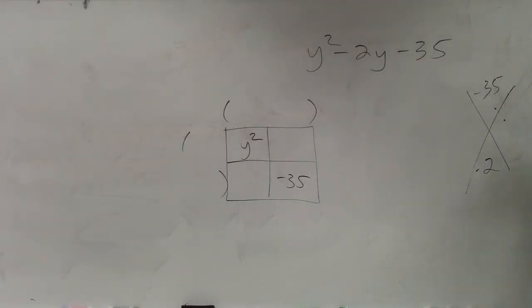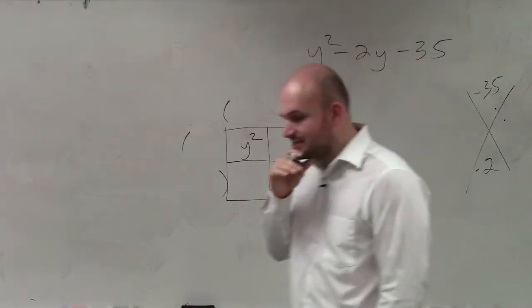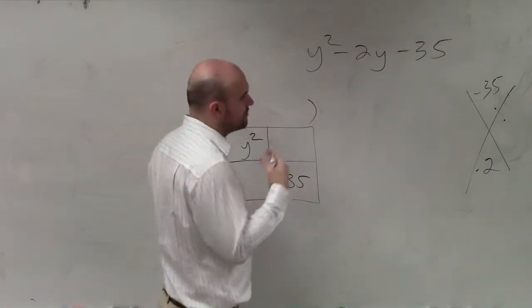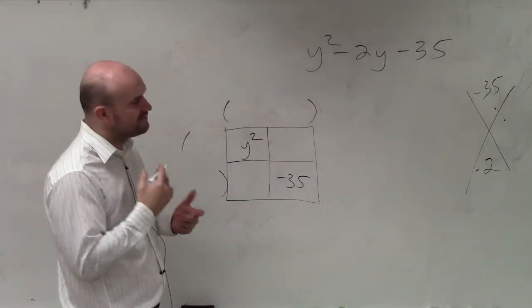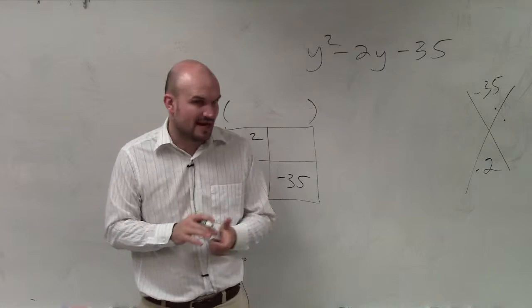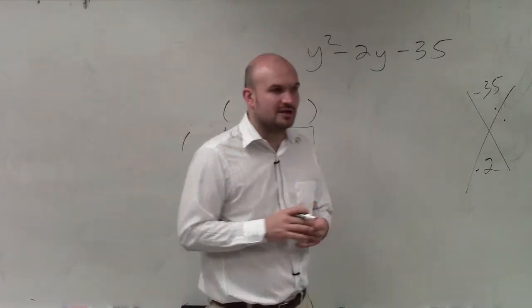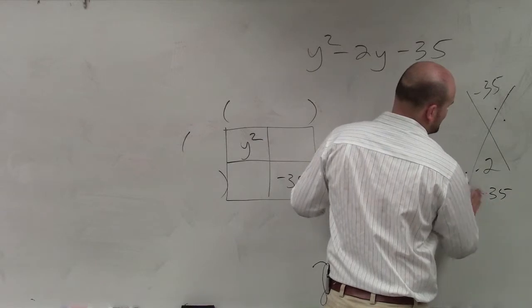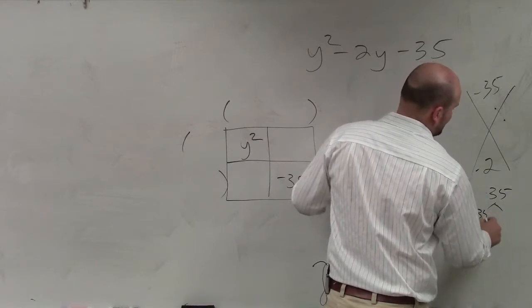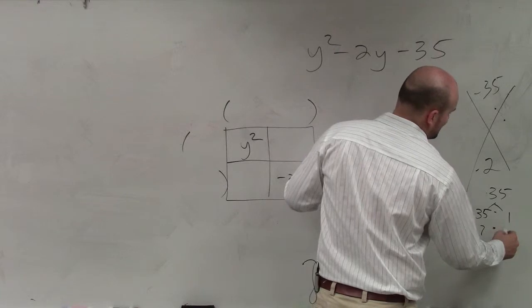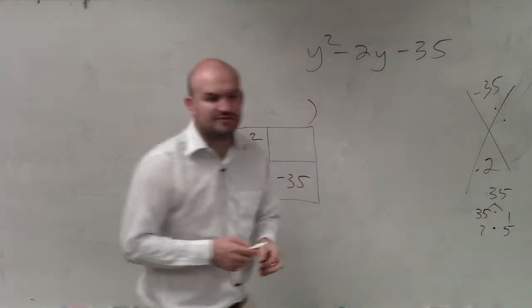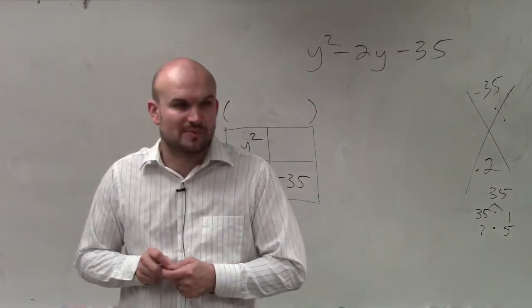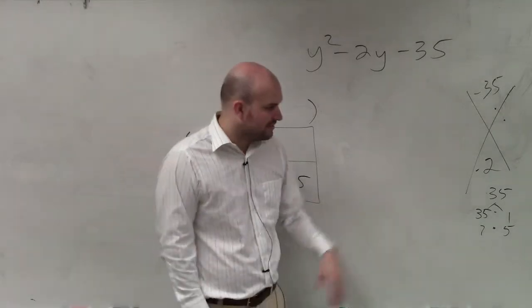So basically, what we want to do is I write down all the factors that give us negative 35. And when we're looking at the factors of negative 35, don't worry about the negatives right now. Just figure out what numbers are going to multiply to give you 35. So you have 35 times 1, you could obviously do 7 times 5. And those are the only two factors that I have that are going to multiply to give me 35.